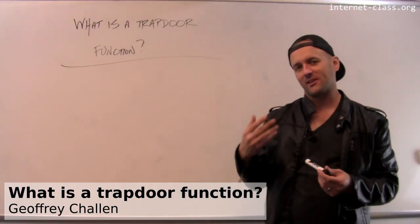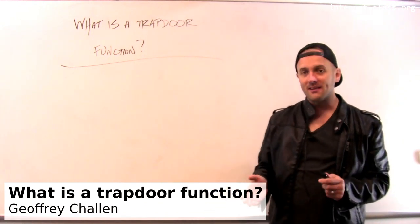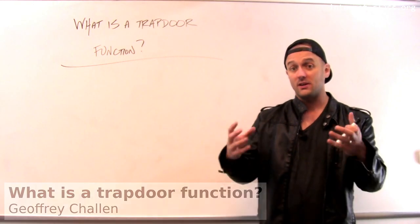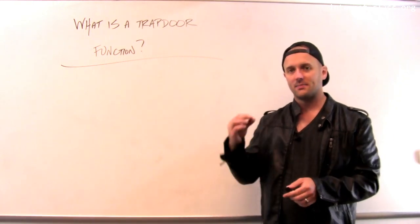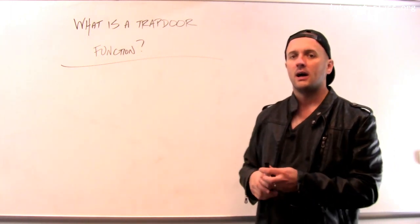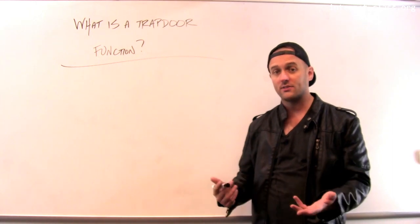Modern encryption has all this incredible mathematical beauty to it, and one of the things that I find really fascinating that's really central to the idea of encryption as we use it online today is something that's known as a trapdoor function. And trapdoor functions weren't really even known or well understood until the 1960s. So what is a trapdoor function?